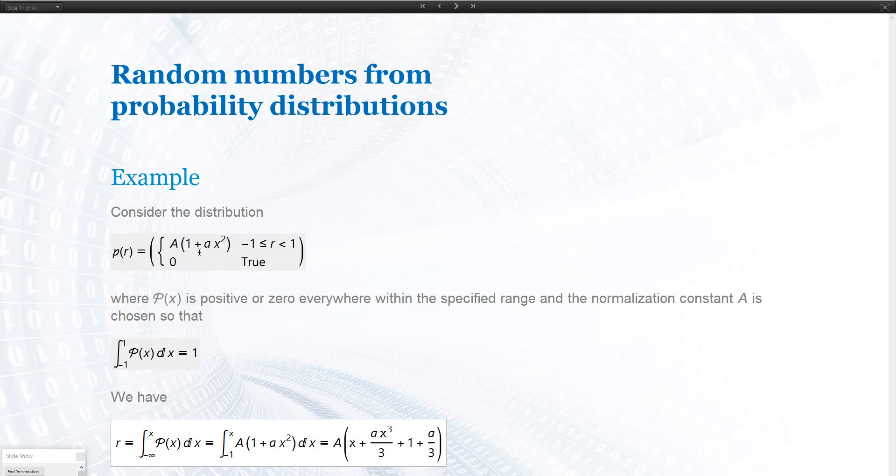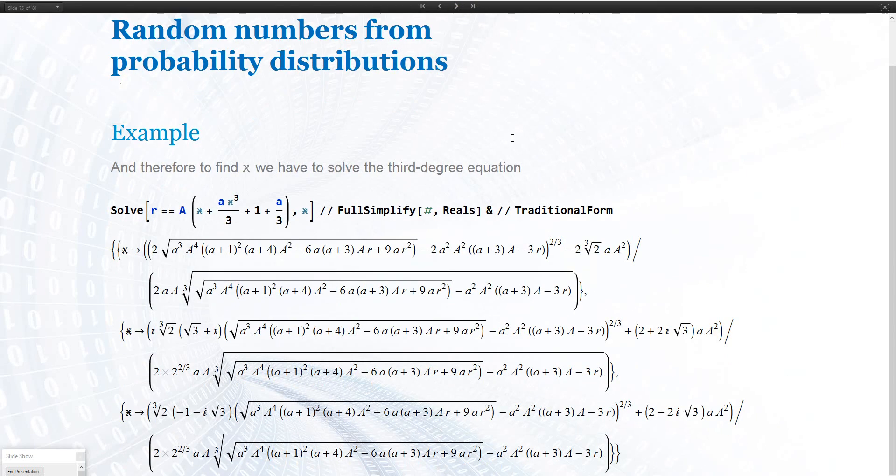Now r equals this expression, and this, now we have to simplify this to have x on one side, and r on the other side. I chose this example because, for this equation, this is possible. You can do this numerically. This is a polynomial of order three. There are three solutions. And these are, two of those are complex, so we ignore them. And the first one here is our transformation function to compute a random x from a given random value r.